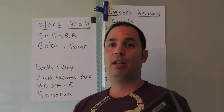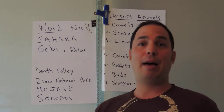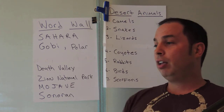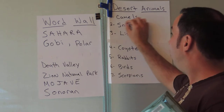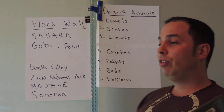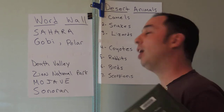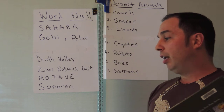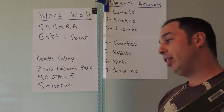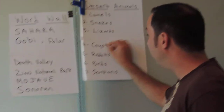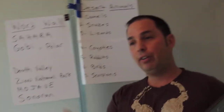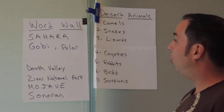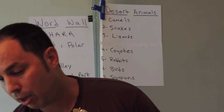Brian says there are a lot of different animals in the desert. Let's talk about animals for a second — what kind of animals are in the desert? Lisa says camels — some deserts have camels, we'll write that up here. Peter says snakes. Lily says lizards — there are a lot of different lizards out in the desert. John says coyotes — the Phoenix Coyotes is the name of our hockey team, and there are coyotes in the desert. Also: rabbits, birds, scorpions.